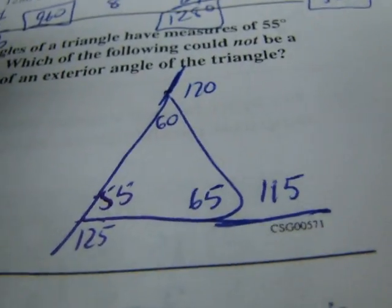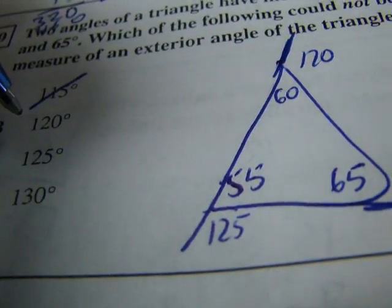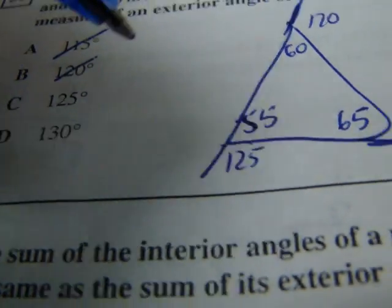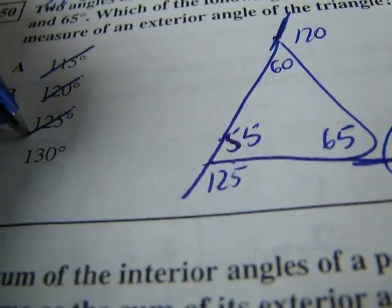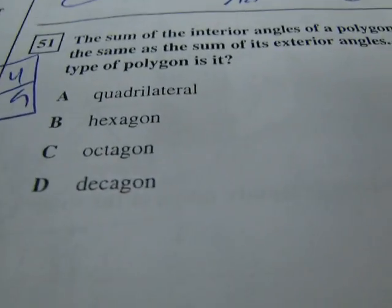Okay so which could not be? Well 115, we've got it right there so that can be. 120, we've got it right there so that can be. And 125, we've got it right here. So that can be. Therefore 130 has to be our answer by process of elimination.